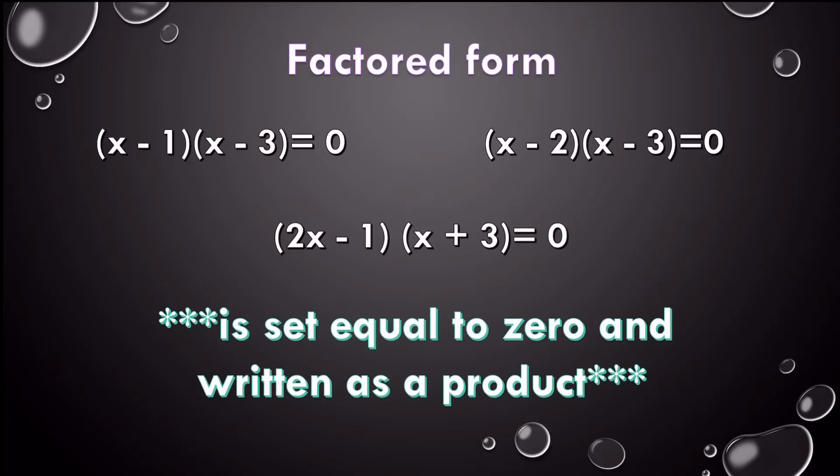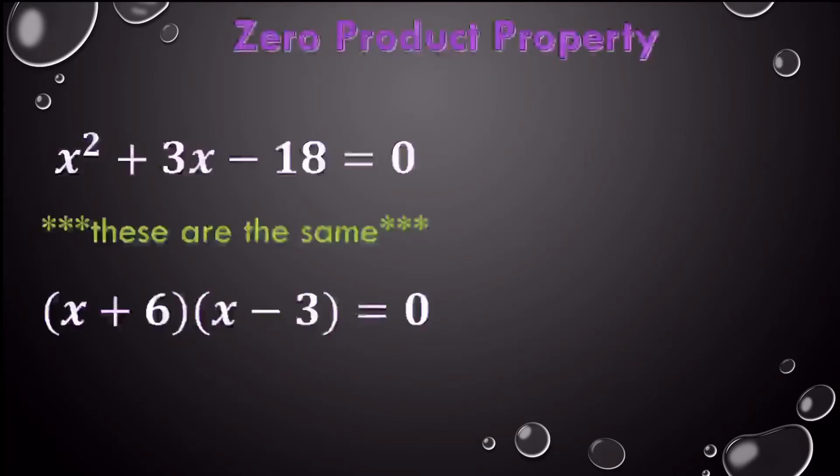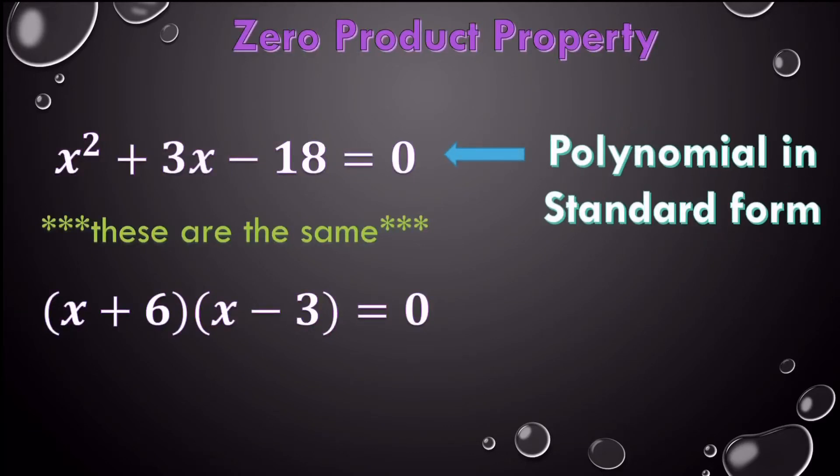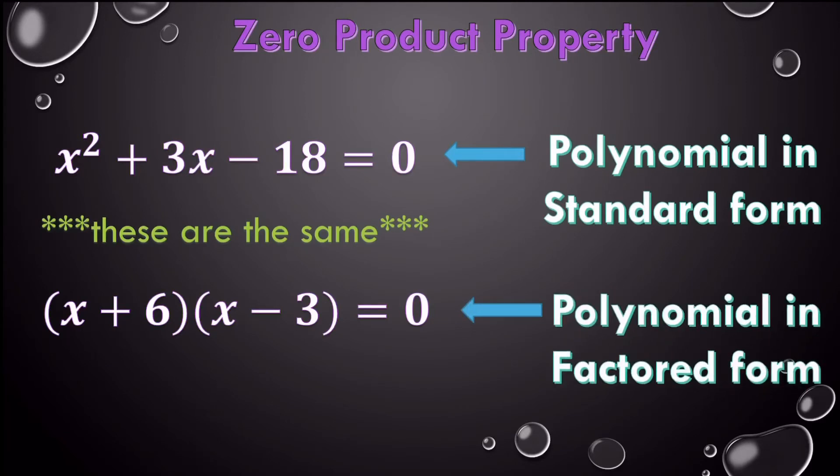Why are all these forms important? Well, it's going to come into play with the zero product property. So if you take a look at these two, the first one, this is a polynomial in standard form. This is a polynomial in factored form. Don't worry at this point right now, you don't have to get standard to factored. You will learn that later. But these two are the same thing.